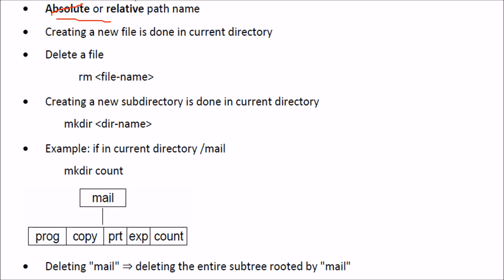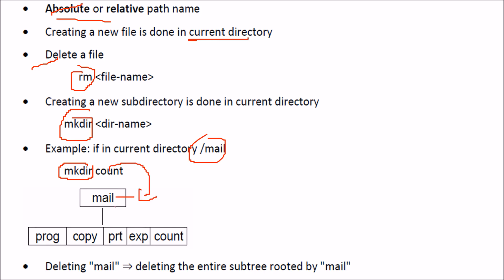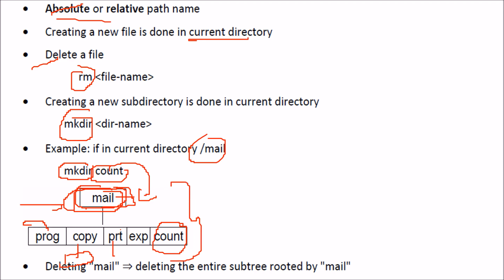To create a new file in the current directory or delete a file, you use commands like rm (remove) and mkdir (make directory). For instance, if you are in the 'mail' directory, you just say mkdir to create a subdirectory like 'count' inside mail. If you want to delete the 'mail' node, you are deleting the entire subtree rooted at mail, including all subtrees for copy, print, etc.